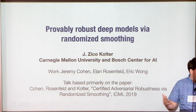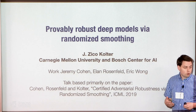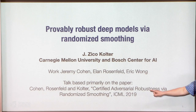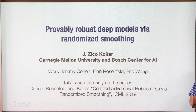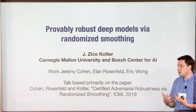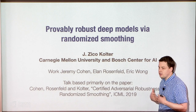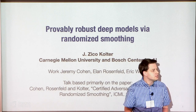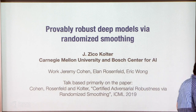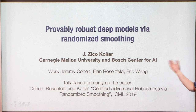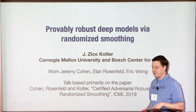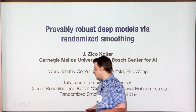We have a lot of work broadly in this area. I'll touch on some of that, including some older work by Eric Wong. But the majority of this talk is going to focus on work by Jeremy and Elan on using randomized smoothing methods to get guarantees about robustness. Since this is the first talk of the day on robustness, I have the unfortunate duty to walk through the introductory slides on robustness that hopefully many of you have seen before.